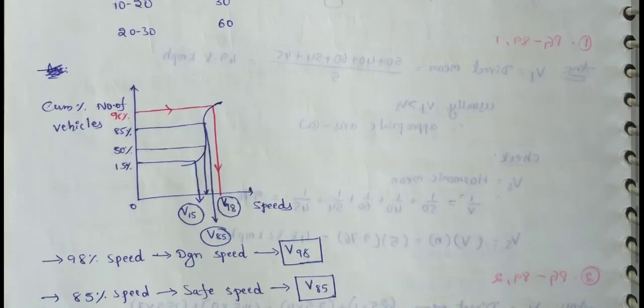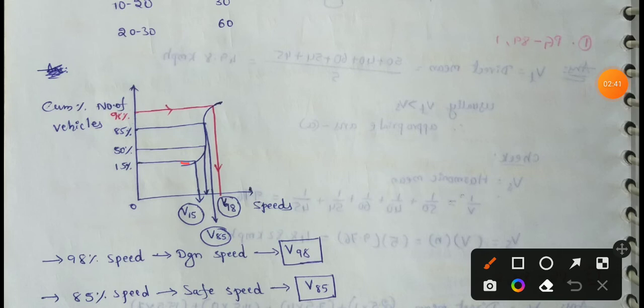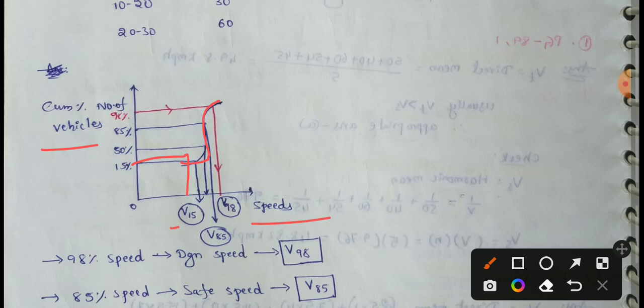This is the cumulative speed distribution curve. The x-direction represents speed, and the y-direction represents the cumulative percentage of number of vehicles. From this curve: 15% gives V15, 50% gives the average speed, and 85% gives V85, which is the safe speed. 98% corresponds to the design speed.